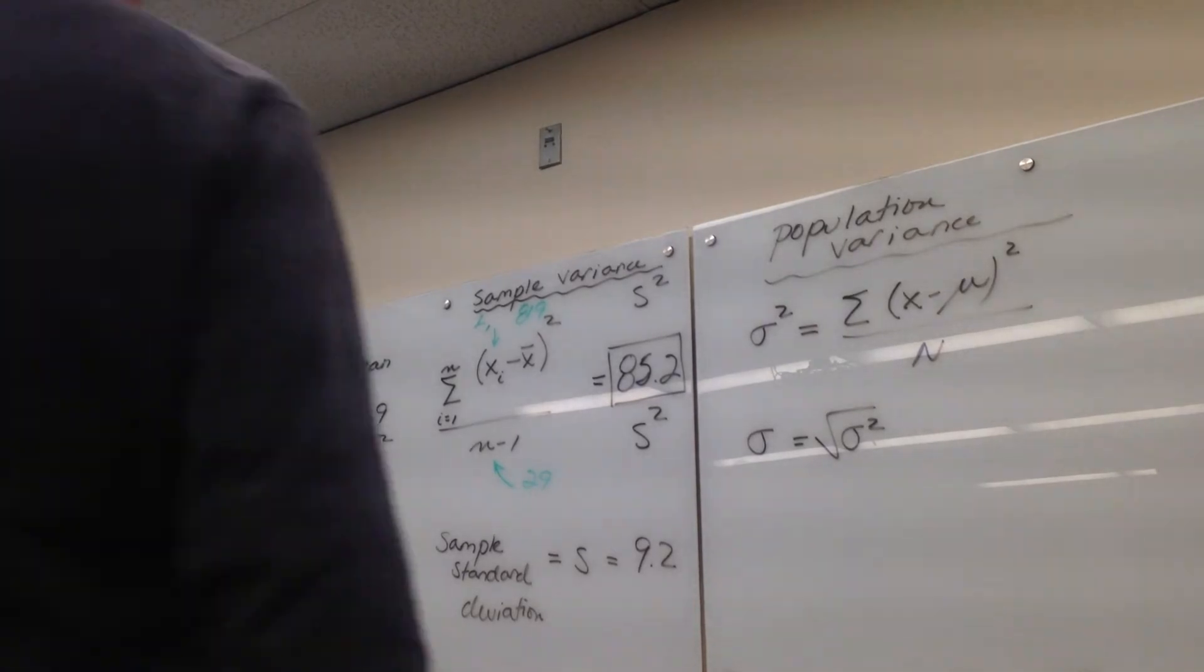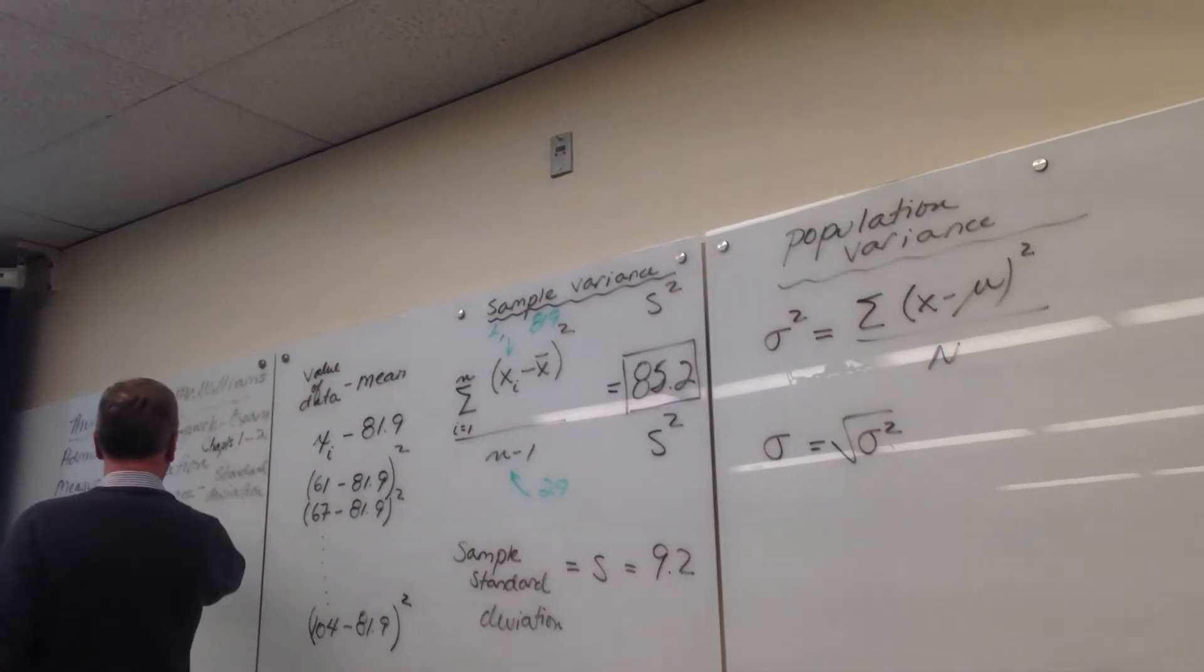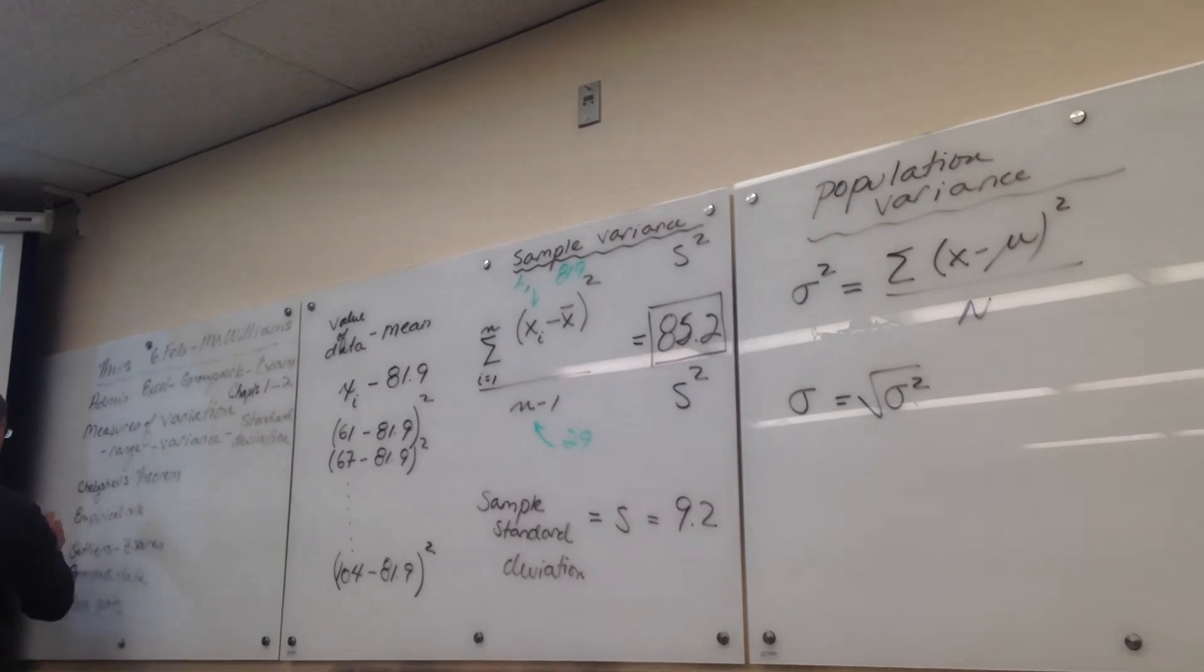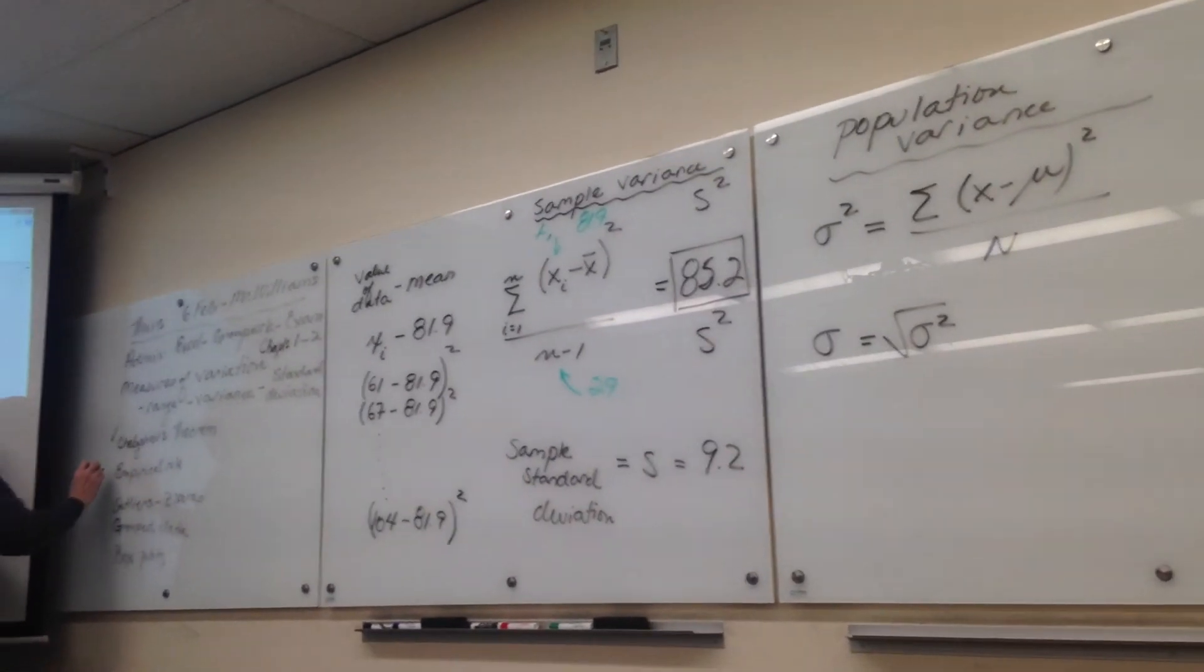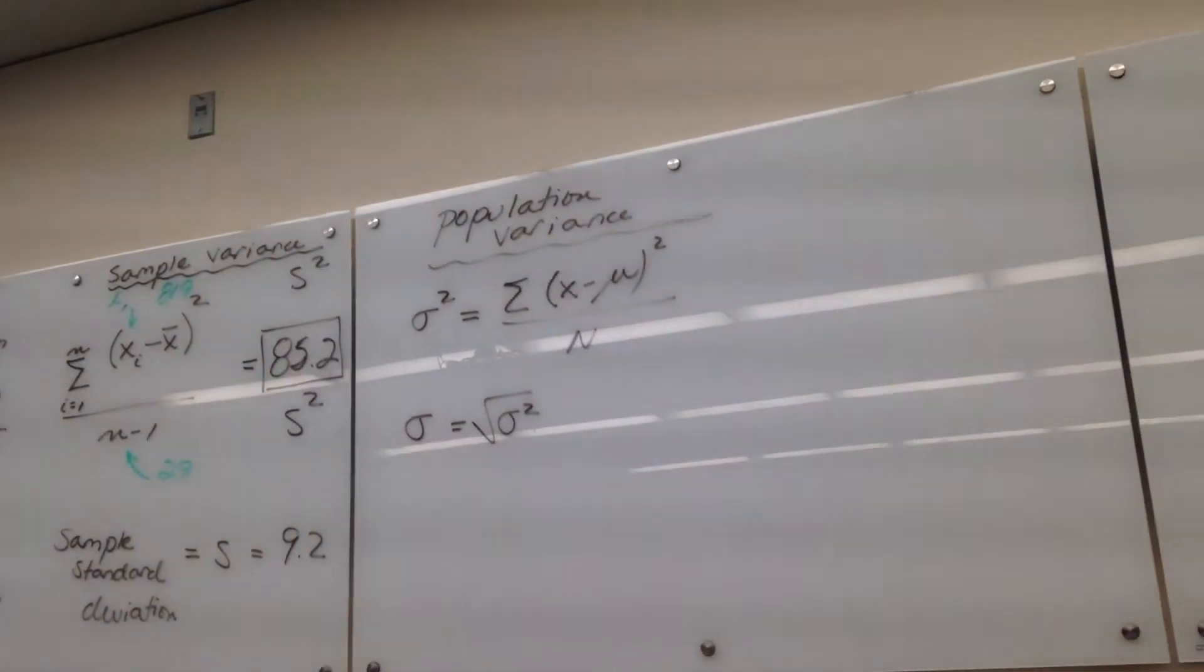Okay, great. We have variance and standard deviation. We're going to talk about Mr. Chebyshev and the empirical rule for a moment.